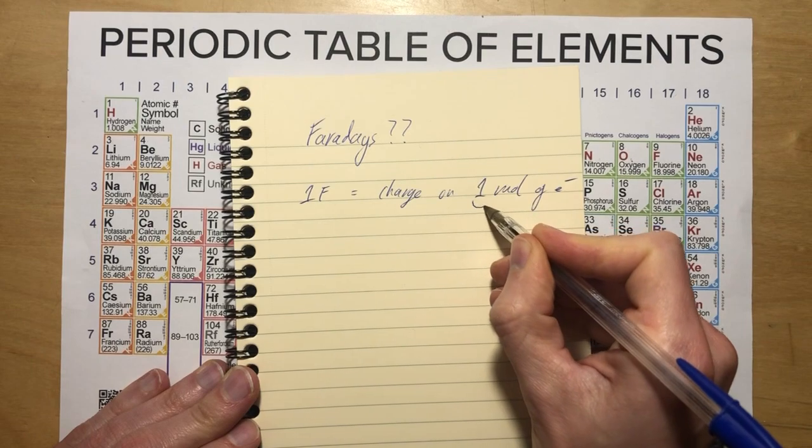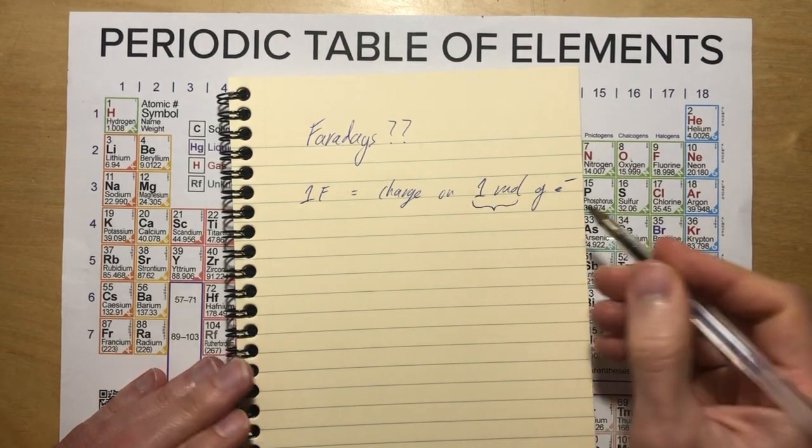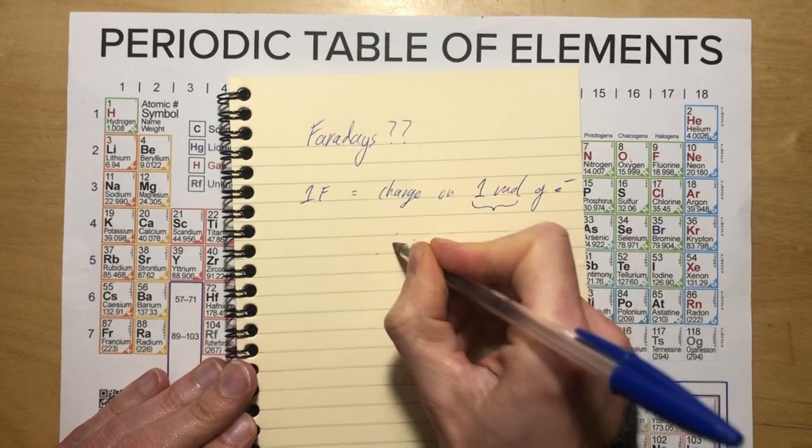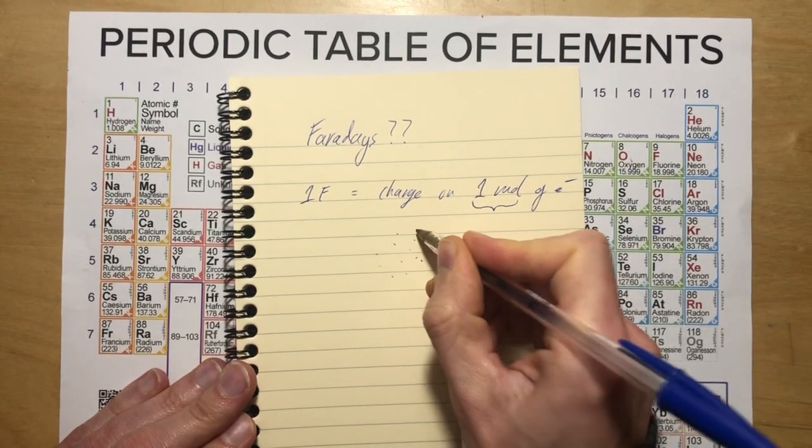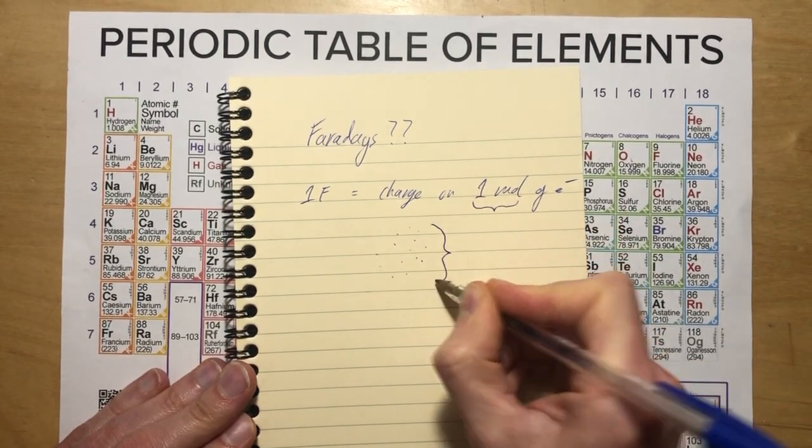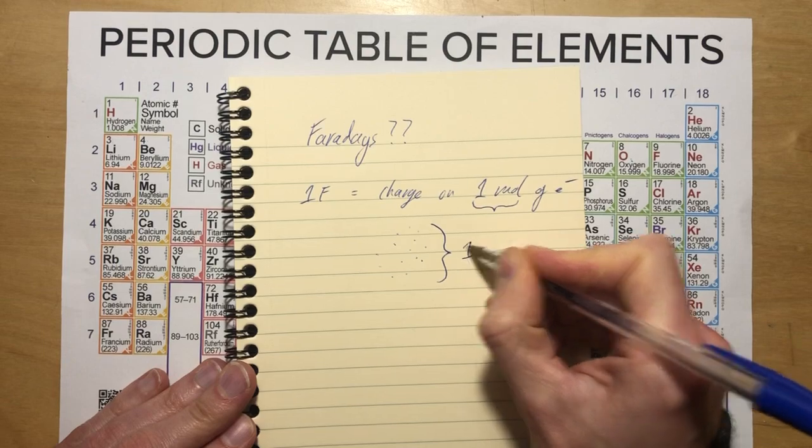Now, you know, a mole, it's just one very big number. So an enormous collection of electrons, imagine we had many electrons, what is the charge on all of that? The answer is one Faraday.